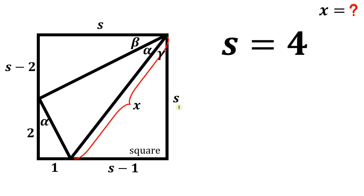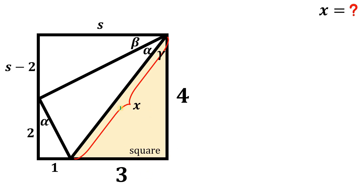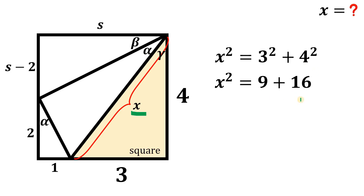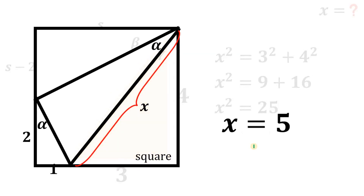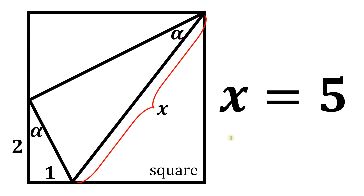Now we know the side of the square is 4. Using this right triangle, s equals 4 and s minus 1 equals 3. We can now find x using the Pythagorean theorem: x squared equals 3 squared plus 4 squared, which is 9 plus 16, equals 25. Taking the square root, x equals 5. Therefore, given this figure, the value of x — this segment x — is simply 5 units. And as always, we are done.